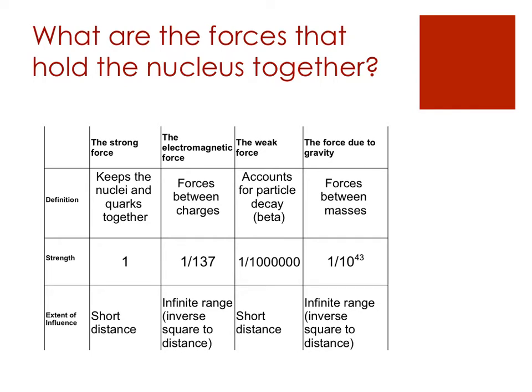Notice the weak force acts over a short distance because we're actually exchanging a massive boson. In contrast, gravity and the photon both have infinite range, and similarly the electromagnetic force also has an infinite range. The electromagnetic force is stronger than gravity and the weak force, but still not as strong as the strong force.